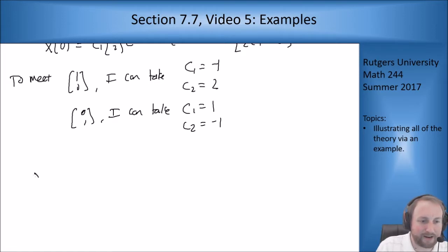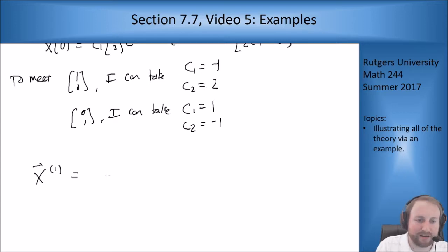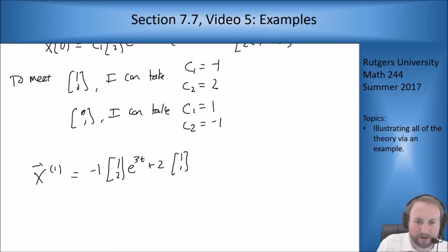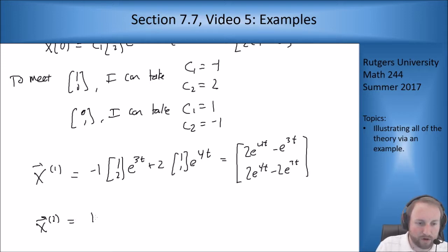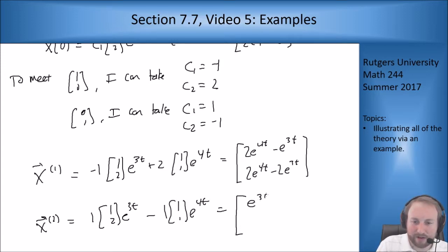This gives two new solutions. For x1 (meeting [1,0]): taking c1=-1 and c2=2 gives -1·[1,2]e^(3t) + 2·[1,1]e^(4t) = [2e^(4t) - e^(3t), 2e^(4t) - 2e^(3t)]. For x2 (meeting [0,1]): taking c1=1 and c2=-1 gives 1·[1,2]e^(3t) - 1·[1,1]e^(4t) = [e^(3t) - e^(4t), 2e^(3t) - e^(4t)].